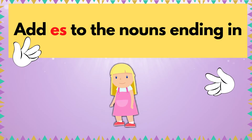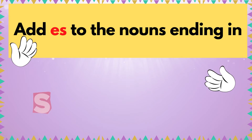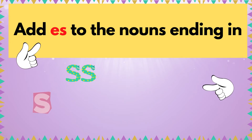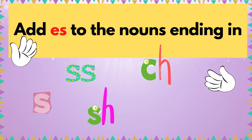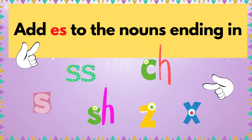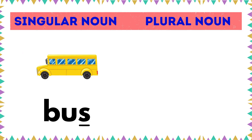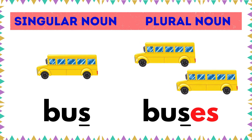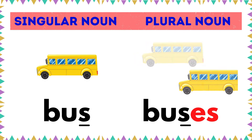Rule number two: add ES to nouns ending in S, SS, SH, CH, X, and Z. Let's have some examples. This is a bus. Bus is a noun that ends in S. Following the second rule, the plural form of bus is buses. You see how we added ES at the end of the word.